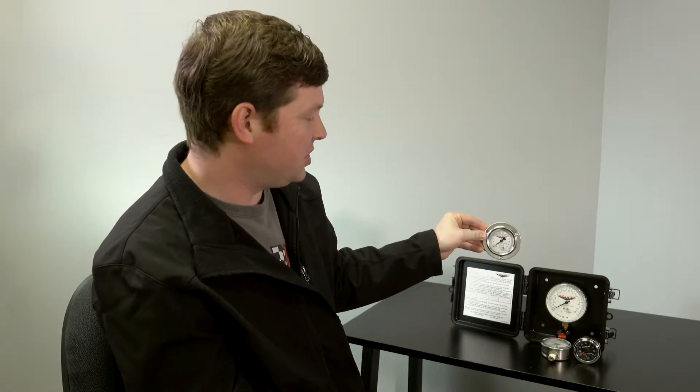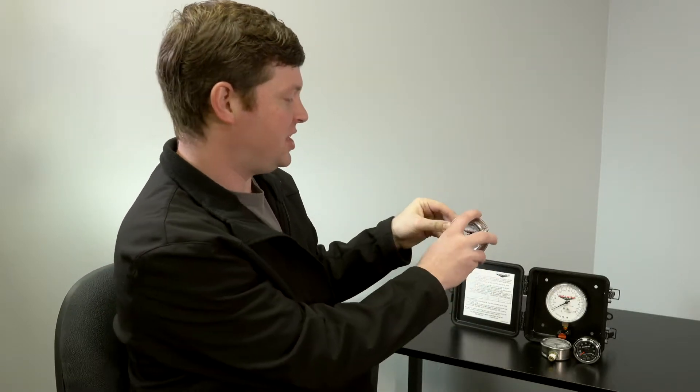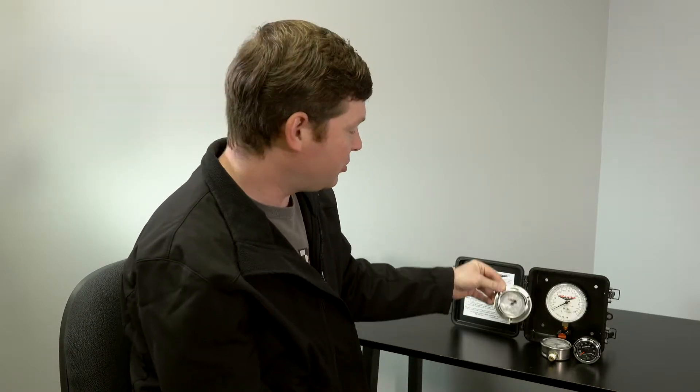This one, when you buy a new trailer, it might have a flange mount air pressure gauge already in there. This is just an upgrade. You can take your old air pressure gauge out, pop that one in, and then you can calibrate to the weight of your trailer.